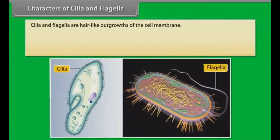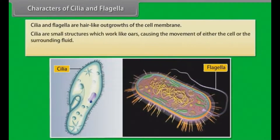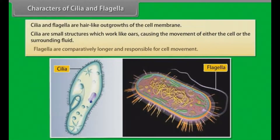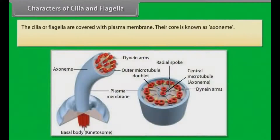Characters of cilia and flagella: Cilia and flagella are hair-like outgrowths of the cell membrane. Cilia are small structures which work like oars, causing the movement of either the cell or the surrounding fluid. Flagella are comparatively longer and responsible for cell movement. The cilia or flagella are covered with plasma membrane. Their core is known as axoneme.